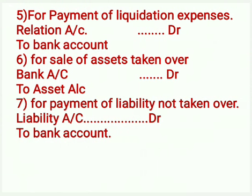Entry number 17: for transfer of accumulated profit and loss — General Reserve, Any Fund indicating accumulated profit. Profit and Loss Account Debit, General Reserve Account Debit, Any Other Fund Account Debit to Equity Shareholder Account. Entry number 18: for transfer of accumulated losses — example, debit balance of Profit and Loss Account, preliminary expenses, etc. — Equity Shareholder Account Debit to Profit and Loss Account or Preliminary Expenses Account. Alternative treatment can also be given through Realization Account. For payment to equity shareholder: Equity Shareholder Account Debit to Bank Account or Share in Purchasing Company Account.